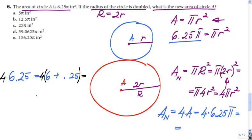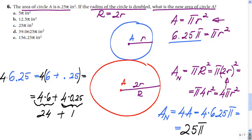If I have to find what is 4 times that, you just multiply 4 times each side. That would be 4 times 6 plus 4 times 0.25. This is 1, that's 24. 24 plus 1 is 25. 25 pi.